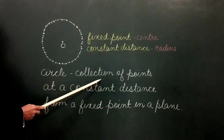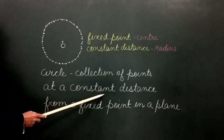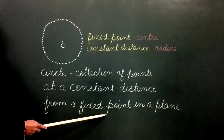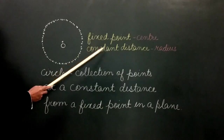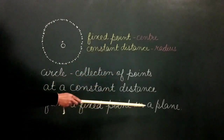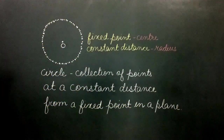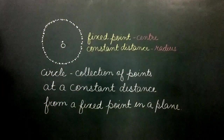A circle is a collection of points at a constant distance from a fixed point in a plane. The fixed point is called the center and the constant distance is called the radius. If we extend this path beyond a plane, we get a sphere in place of a circle.